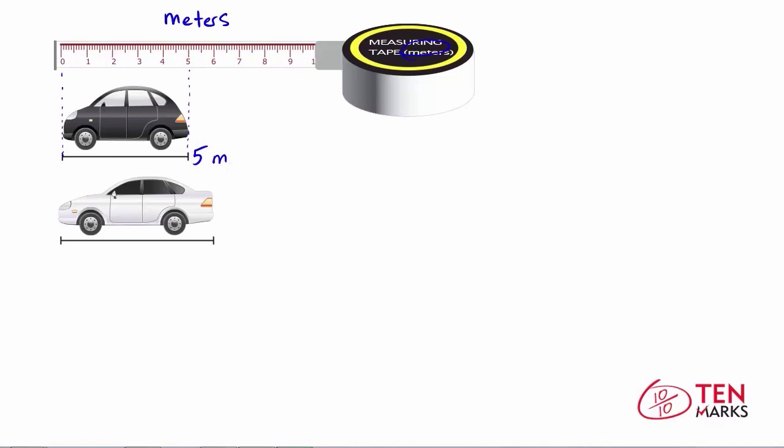Now let's do the same thing with the white car. So the tip of the car is at zero, and now the tail of the car ends up lining up with the number six. So the white car is six meters long.